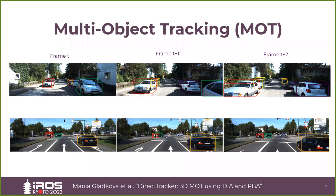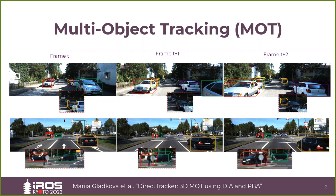Multi-object tracking, as the name suggests, refers to the task of assigning temporally consistent IDs to the objects of interest. The majority of existing 3D trackers follow the tracking-by-detection paradigm and rely on the output from 3D detectors to perform object tracking. On the slide we demonstrate an example of tracking car objects which is affected by false negative, false positive detections, and incorrect association due to localization inaccuracy.